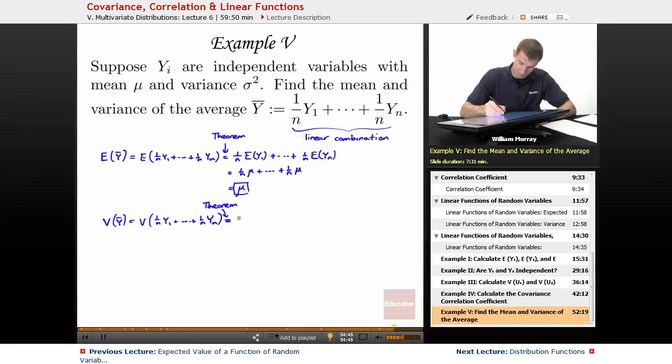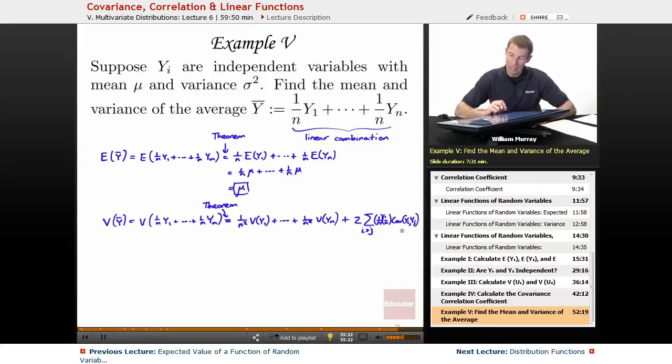So the way this works is you pull out the coefficients, but you square them. So 1 over n squared times the variance of y1, up to 1 over n squared times the variance of yn. And then there's these cross terms. So there's this cross term, which is 2 times the sum as i is bigger than j of the coefficients, 1 over n times 1 over n times the covariance of yi with yj.